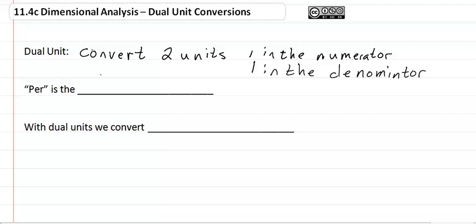Per is the bar. With dual units, we convert one unit at a time.